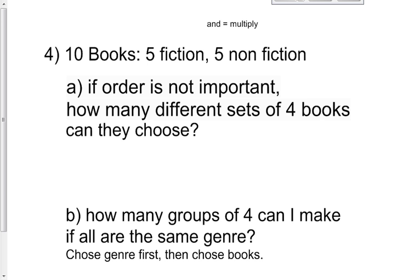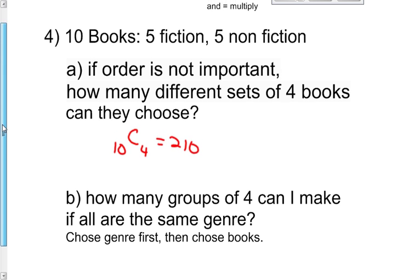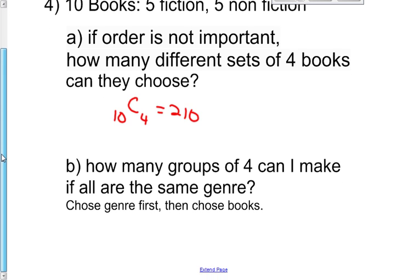Next question. I have ten books. Five are fiction, five are non-fiction. If order is not important, how many different sets of four books can they choose? Order is not important, I just want four books in my group. Ten total, choose four. Ten choose four. You could use your Pascal's triangle now. Go to row ten, start counting with zero, zero, one, two, three, four. Did you end on 210? A little shortcut version of using the nCr value without having to go to your calculator.